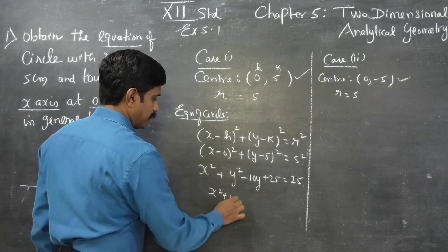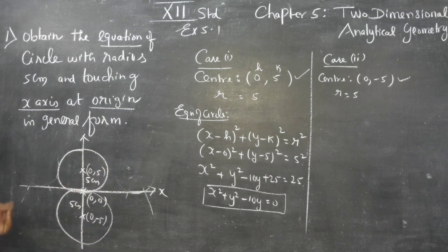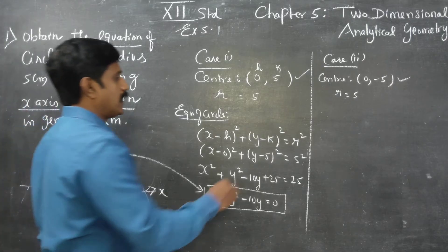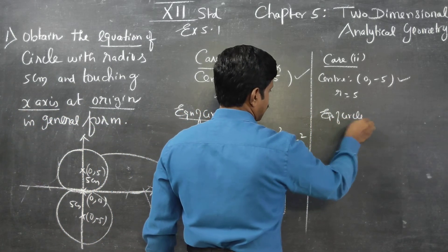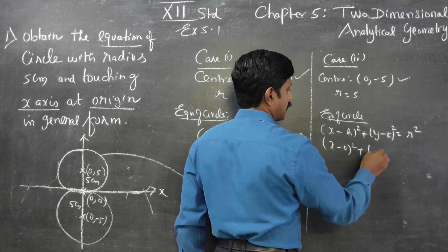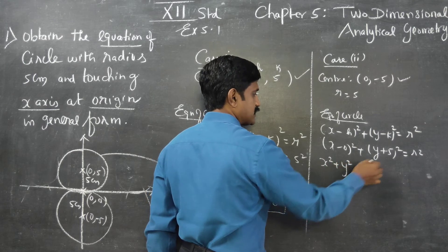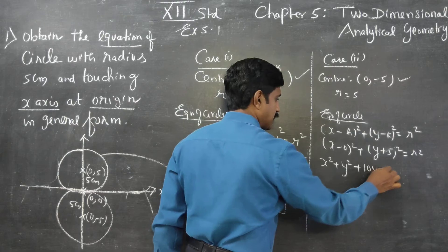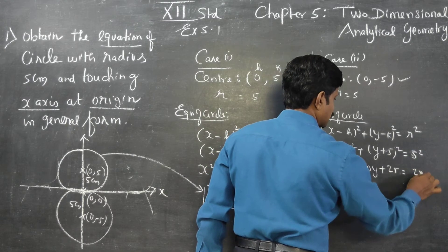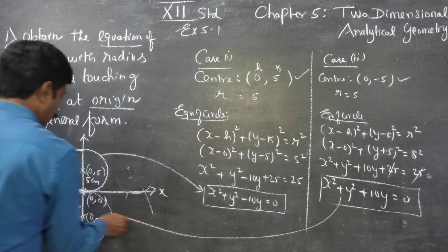For the circle above the x-axis, the center is (0, 5). Substituting into the formula: (x - 0)² + (y - 5)² = 5². Expanding using (a - b)² = a² - 2ab + b²: x² + y² - 10y + 25 = 25. Cancelling 25 on both sides gives x² + y² - 10y = 0.